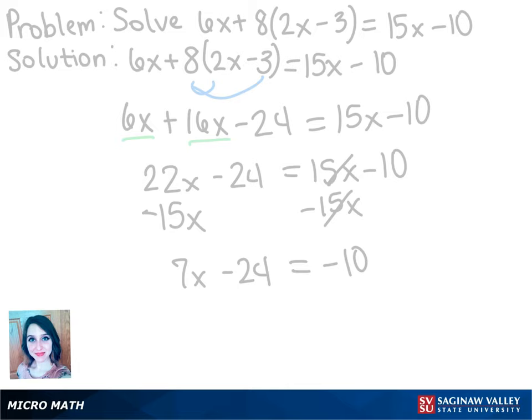Now we can add 24 to both sides so that 7x is truly by itself. The 24s cancel out, so we have 7x equals 14.